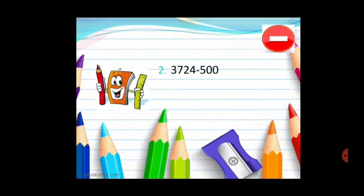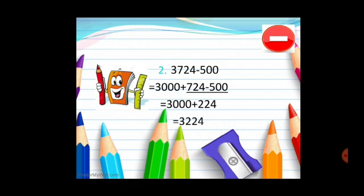Let's take one more example, 3724 minus 500. Here we will break 3724 because it's a big number. We will split it into 3000 plus 724. Now we will subtract the underlined numbers. Answer will be 3000 plus 224. Add both the numbers and here we will get the final answer, that is 3224.